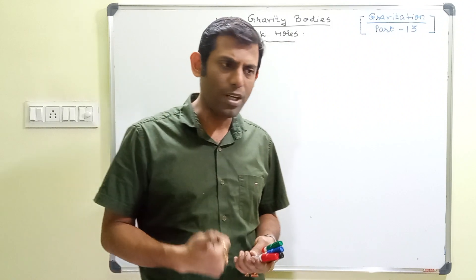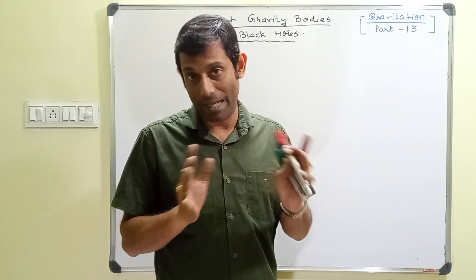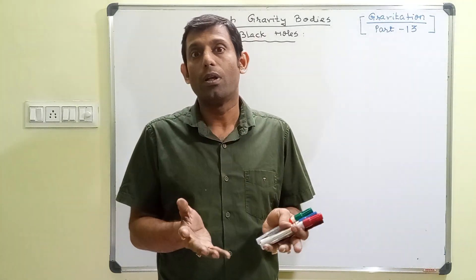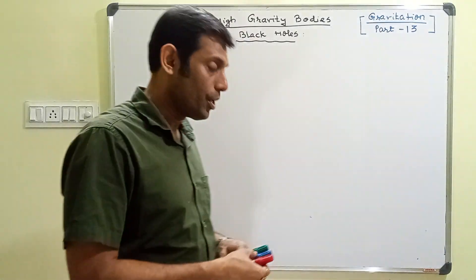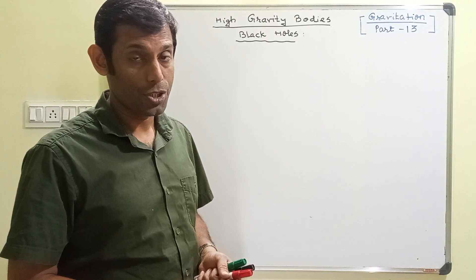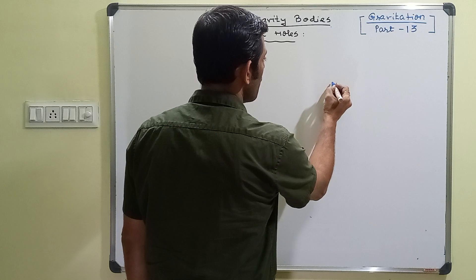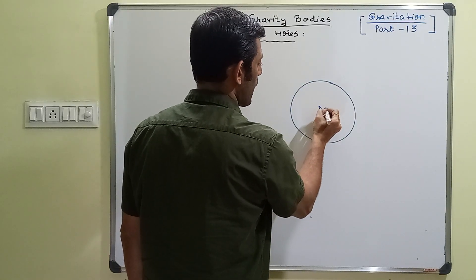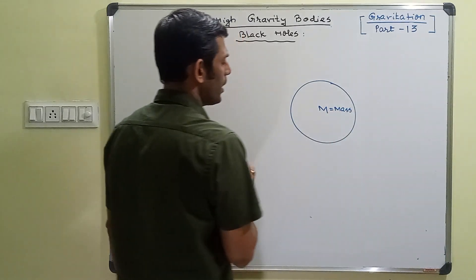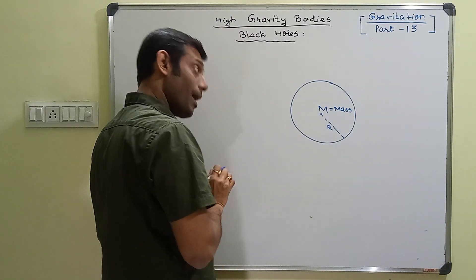What happens in case of a body which has very high density? That means its volume is small but mass is large. Mass per unit volume is very high. Say for example I have a body here whose mass is m and whose radius is capital R.